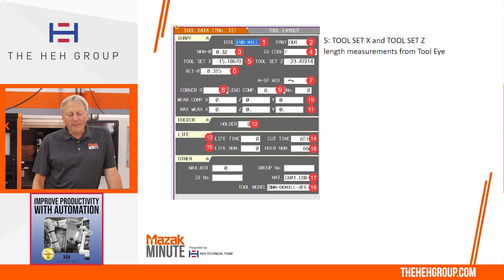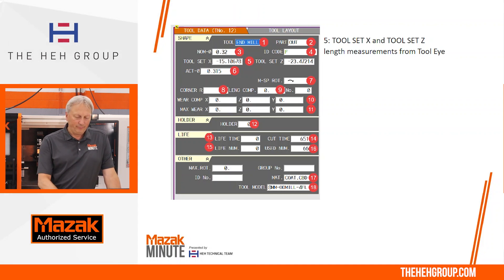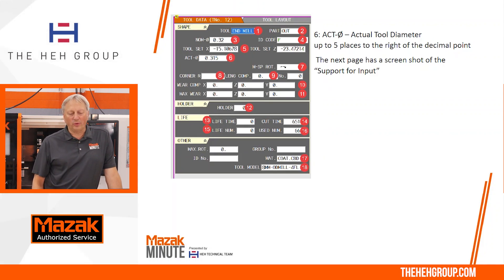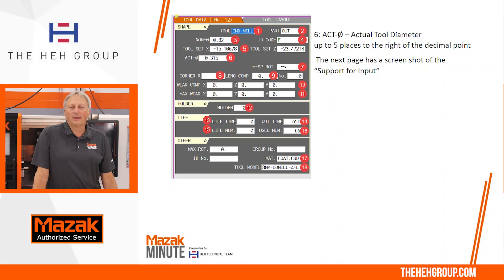Number five is the tool set — you see it says tool set X and tool set Z. This will be the tool measurements off of the tool eye. Number six is the actual diameter. This is up to five places to the right of the decimal point and is used to control cutter compensation.